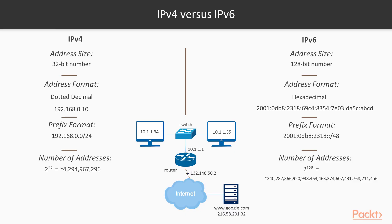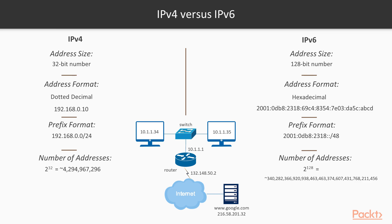So what is an IP address? Quite simply, an IP address is a unique number given to a network device, such as a router or host, to uniquely identify them to other devices for the purpose of routing data between a source and destination.